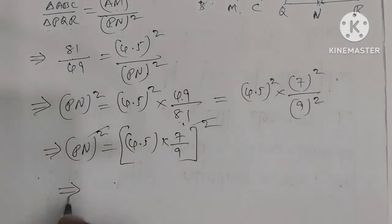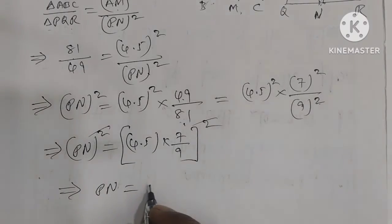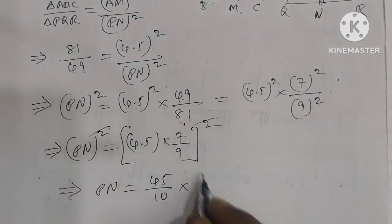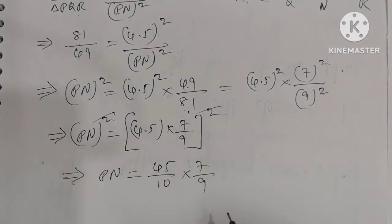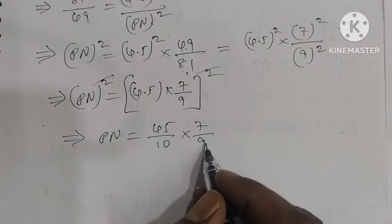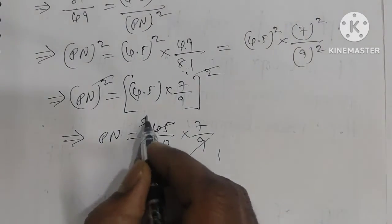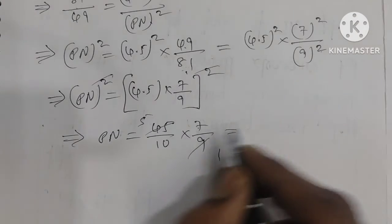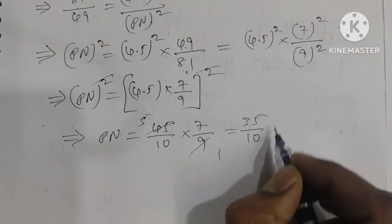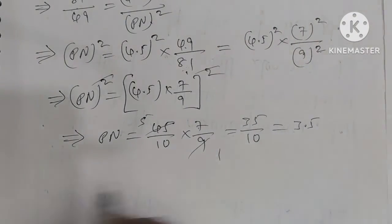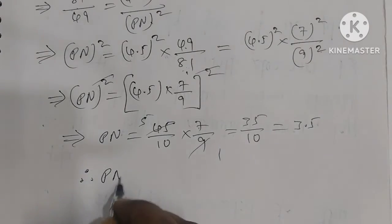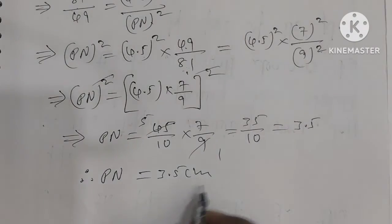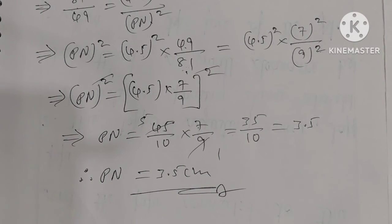The square and square cancel. So PN = 4.5 × 7/9 = (45/10) × (7/9) = 315/90 = 35/10 = 3.5. Therefore, the altitude of the smaller triangle PN is equal to 3.5 centimeters. This is the answer.